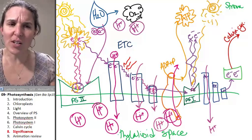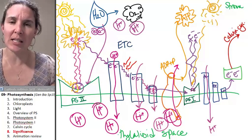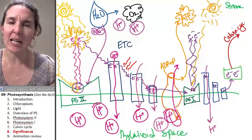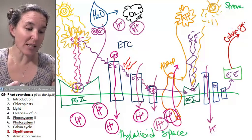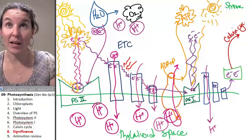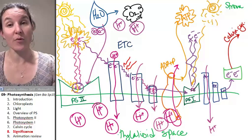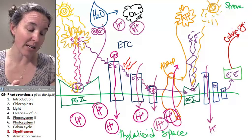It also somehow, and I don't know all the chemical details of this, but it facilitated the creation of the ozone layer. So the process of photosynthesis produced the ozone layer that protects us from ultraviolet radiation, which is also very handy.